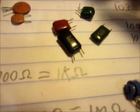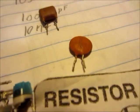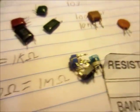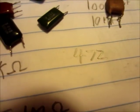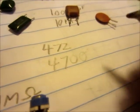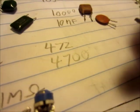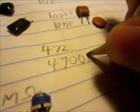Let's do a different one. This one right here, the number on it is 472. So the first two are the actual numbers, 47, and then we have two zeros: 1, 2.